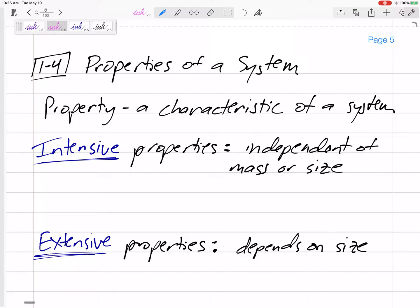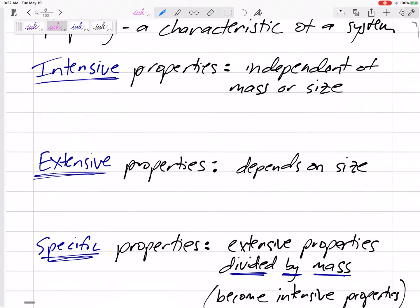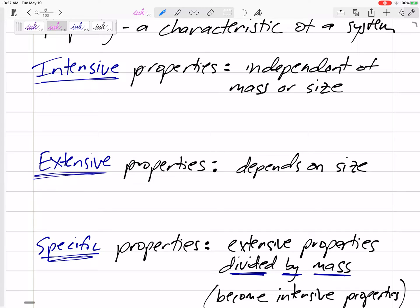Okay, some more definitions. Properties are characteristics of a system and we have some different types of properties: intensive, extensive, and specific.